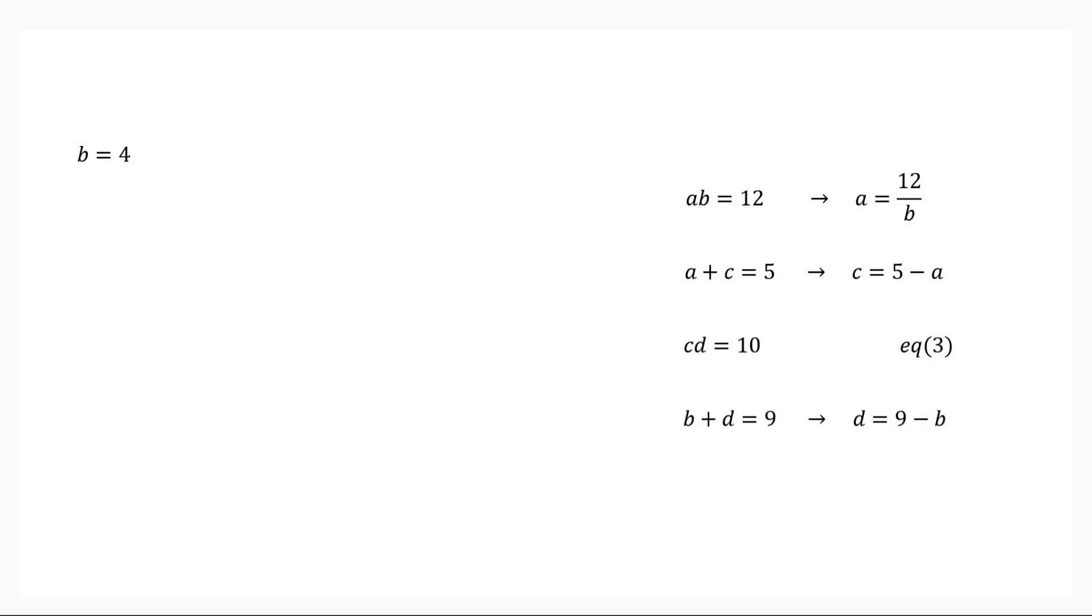When B equals 4, we get A equals 12 over 4 which is equal to 3. C equals 5 minus 3 which is equal to 2. D equals 9 minus 4 which is equal to 5. So we got first set of solutions.